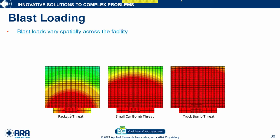Blast loads vary spatially across the facility — both horizontally and vertically. Looking at three figures: with a package threat you see a smaller area affected; with a small car bomb you get a lot more area affected; and with a truck bomb you get significantly more area affected. As a general rule: with all else being equal, small bombs make small holes and large bombs make large holes.